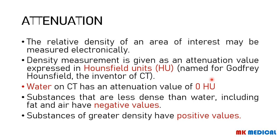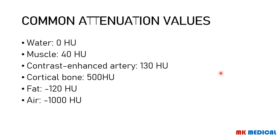Attenuation is simply a measure of the relative density of an area of interest, and we can measure this electronically. The unit used is Hounsfield units (HU), named after Godfrey Hounsfield, who invented CT scans. Water has a CT attenuation of 0 HU, and other substances are compared relative to water. Less dense substances like fat and air have negative values; denser substances have positive values. Common values: water = 0 HU, muscle = 40 HU, contrast-enhanced artery = 130 HU, cortical bone = 500 HU, fat = -120 HU, air = -1,000 HU.